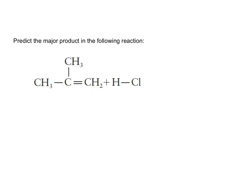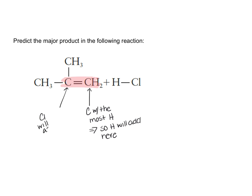Here is an example you can try on your own. Going through the steps: first, identify the carbon-carbon double bond. Second, identify the carbon with the most hydrogens — that's where the hydrogen will add. This carbon has the fewest hydrogens, so chlorine will add there. Drawing in everything that doesn't change plus the chlorine, we have a single bond where the double bond was, with a CH3 where hydrogen has been added and chlorine attached too.